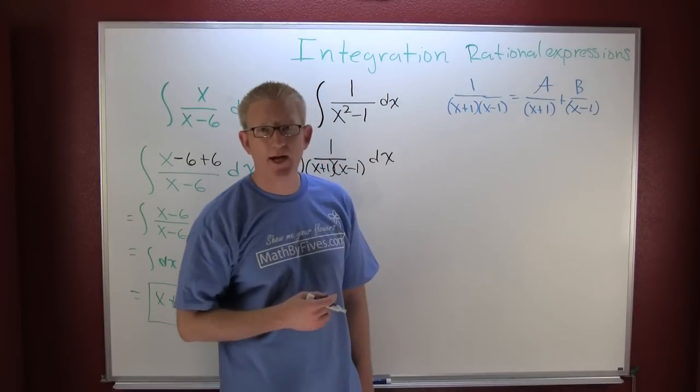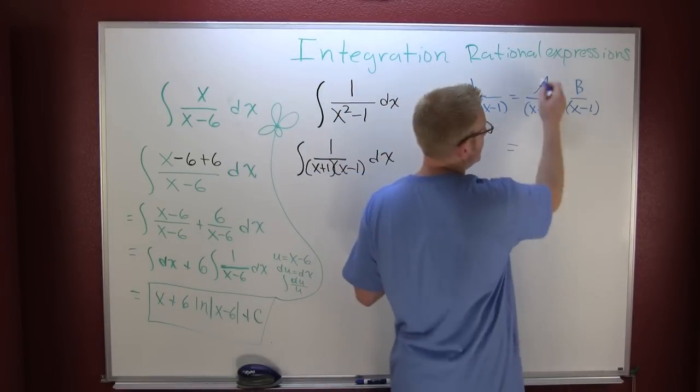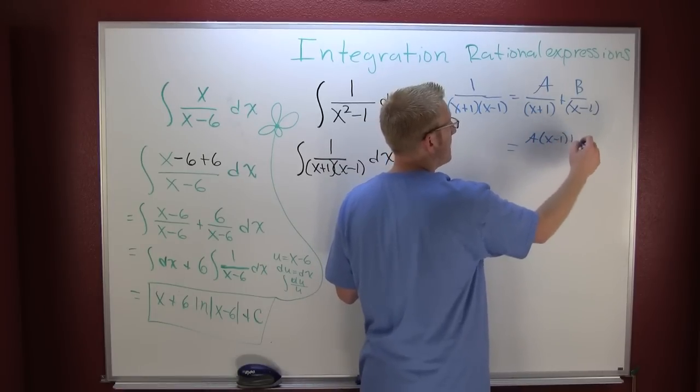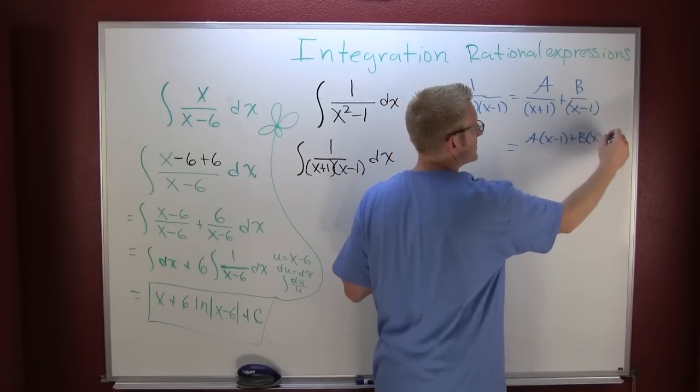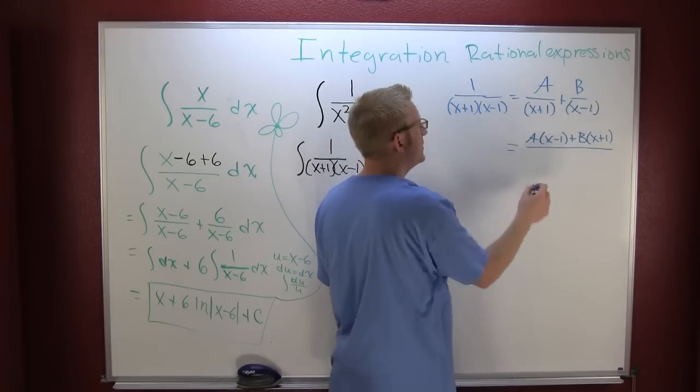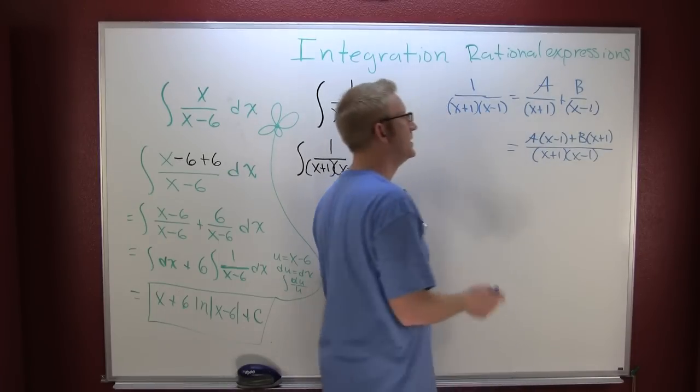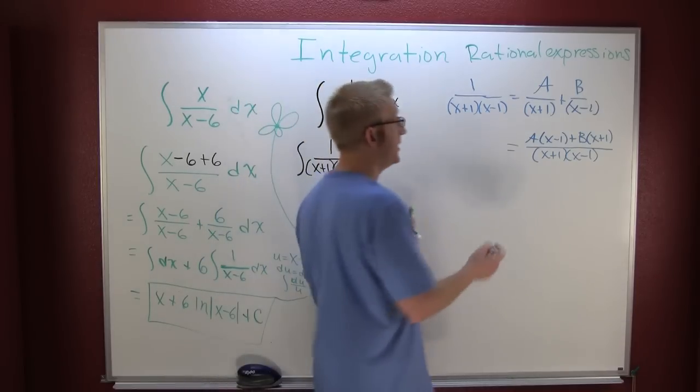So what I need to do is I need to multiply that guy out. A times x minus 1 plus B times x plus 1, all over x plus 1 times x minus 1. If I distribute through, gather, collect and combine...